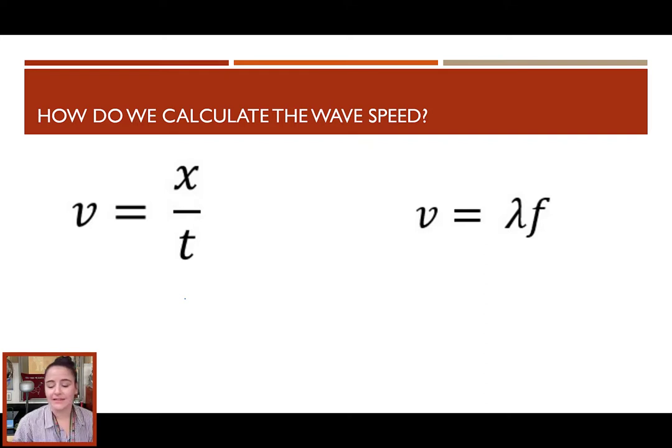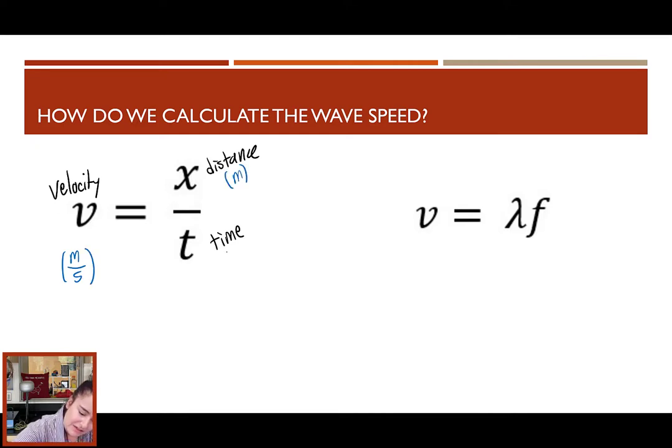Now, with wave speed, there are two equations that we can use. The first is your classic speed equation. Velocity is equal to x, which we use for distance over time. Whenever we're using this equation, our units can be pretty much whatever we need, whatever makes sense in the context of our problem. But, the standard units for velocity are meters per second. For distance is meters. And, for time, in seconds. Now, this equation is also for the velocity. But, it looks a little different. Here we have the velocity. And, remember, this is the Greek letter lambda, which we use for wavelength. So, you can also think of velocity as the wavelength times the frequency.